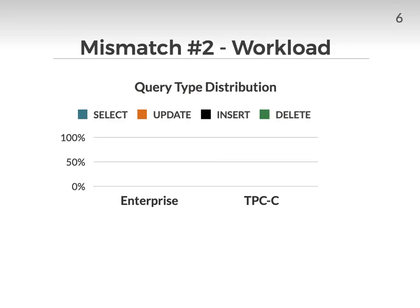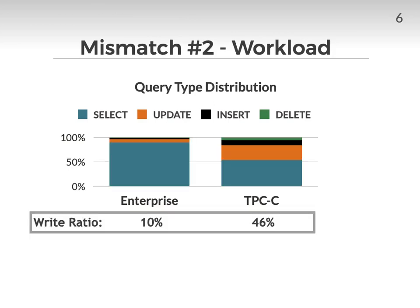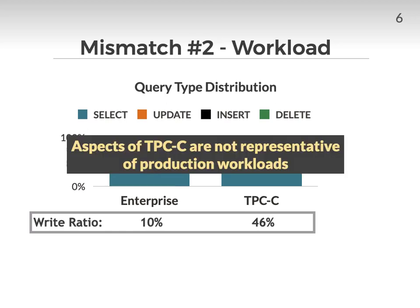The second mismatch is the workload. This graph shows the query type distribution for an enterprise workload versus the TPCC benchmark. We see that the TPCC benchmark has a much higher write ratio than the enterprise workload, and this finding is consistent with comparisons in past work. There are other differences too — for example, with the schema. In production workloads, some tables have hundreds of columns and dozens of indexes. Overall, there are aspects of TPCC that are not representative of production workloads.